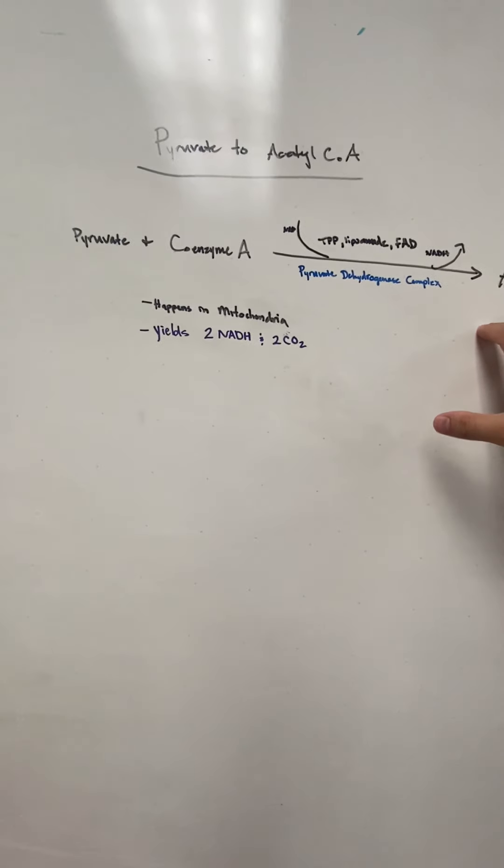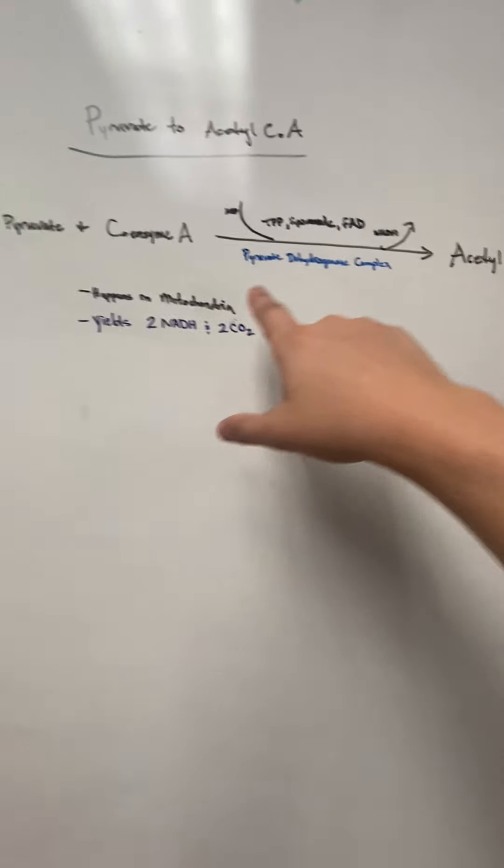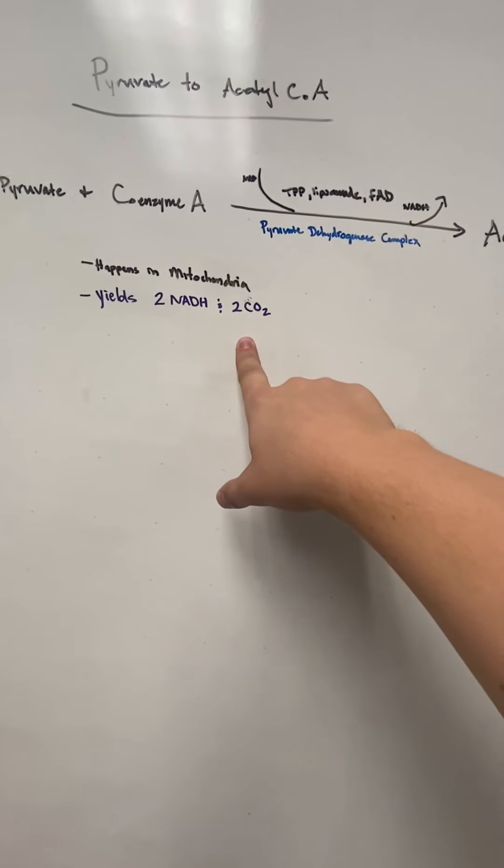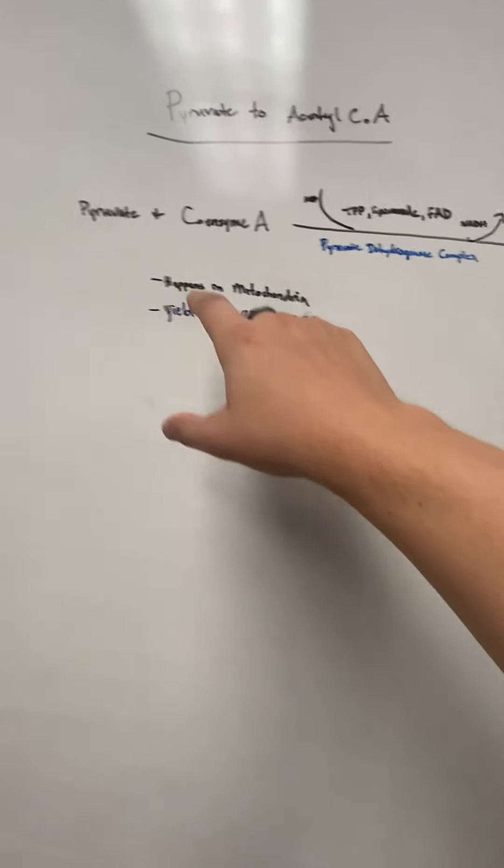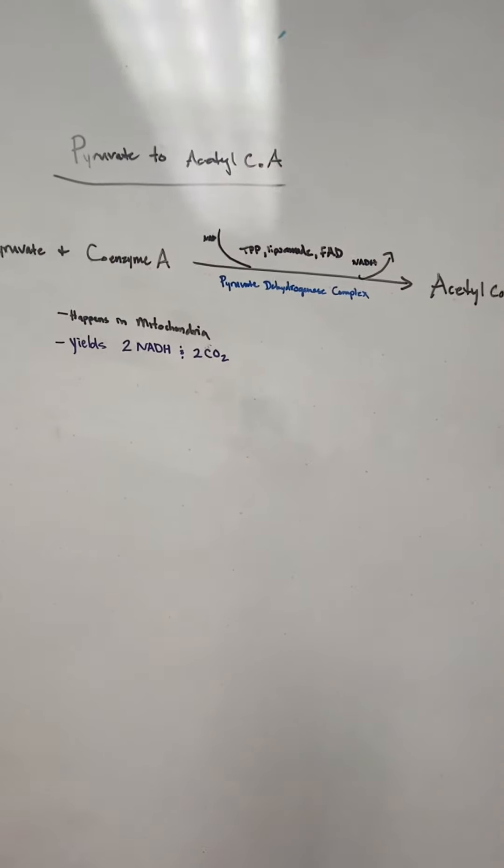The biggest takeaway from this reaction is pyruvate is changing to acetyl-CoA, and we yield two NADHs and two carbon dioxides, because it has two molecules of pyruvate for every one molecule of glucose.